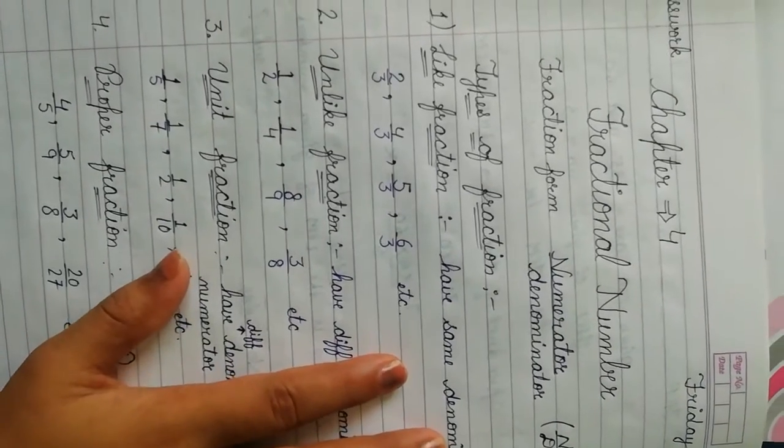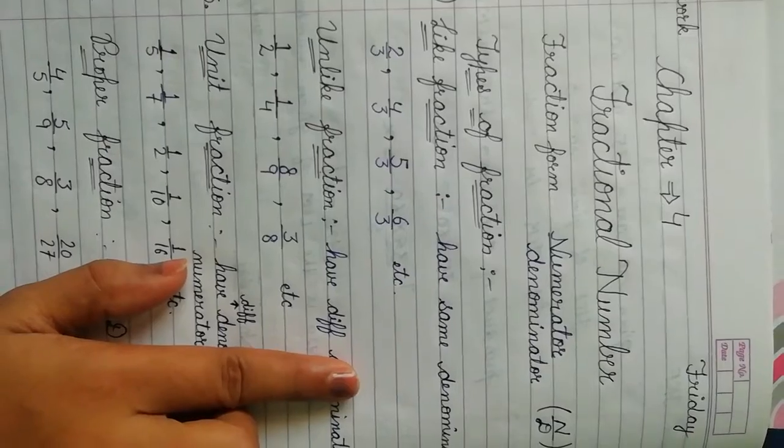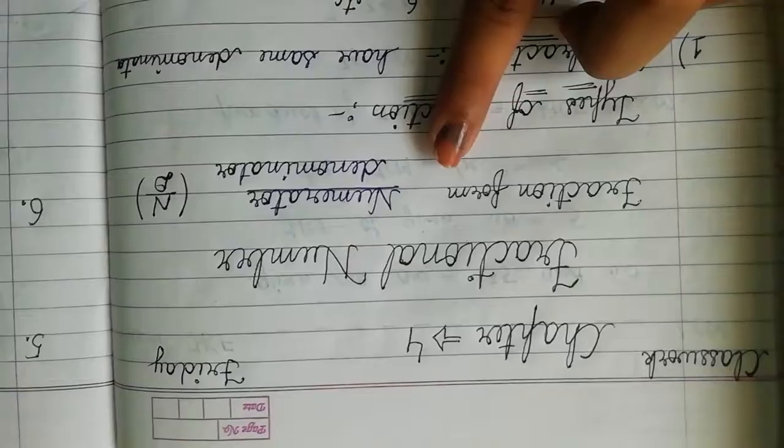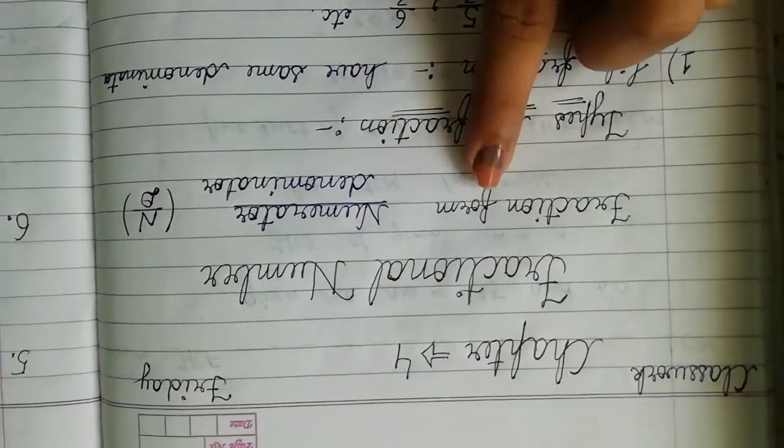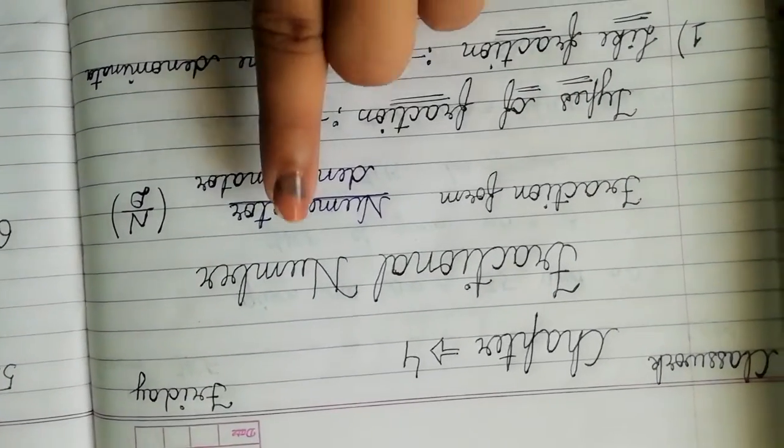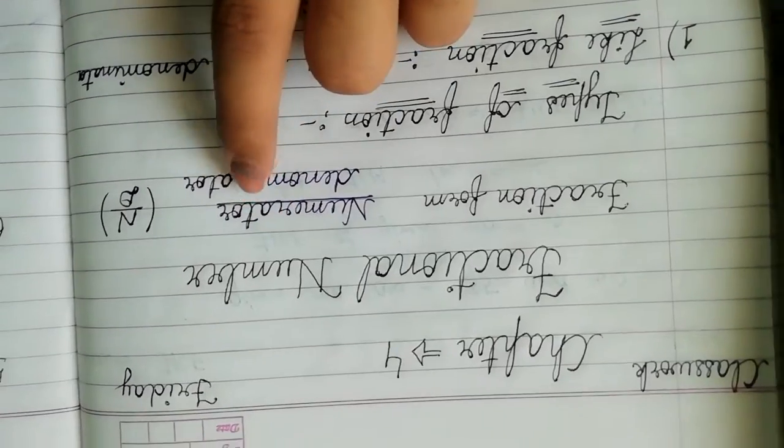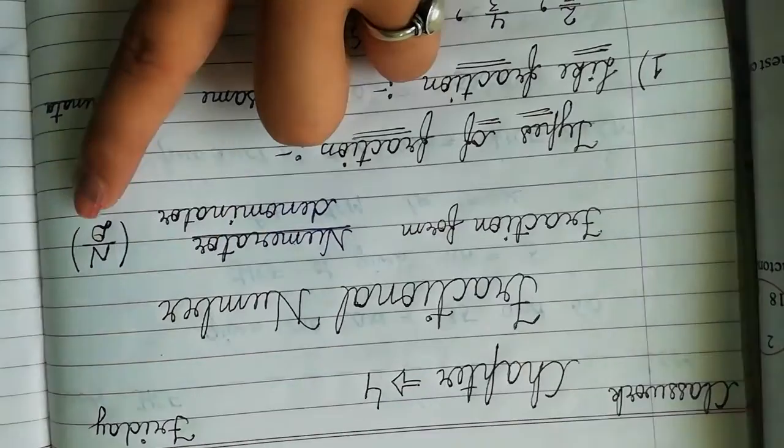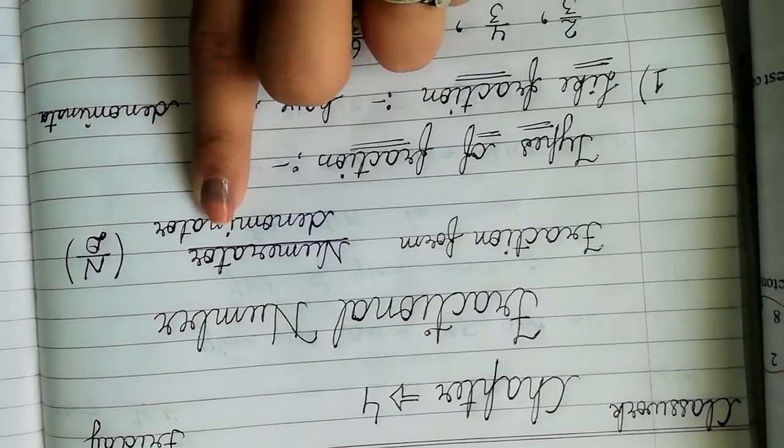Students, today we are going to discuss chapter number 4 of class 5th Maths, that is fractional number. So what is the meaning of fraction? Fraction form is that form which has numerator upon denominator, N upon D. N stands for numerator and D stands for denominator.